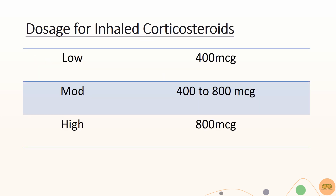The dosages of ICS can be classified into low, moderate, and high. Low dose refers to less than 400 micrograms, moderate refers to doses of 400 to 800 micrograms, and any dose higher than 800 micrograms refers to a high dose.